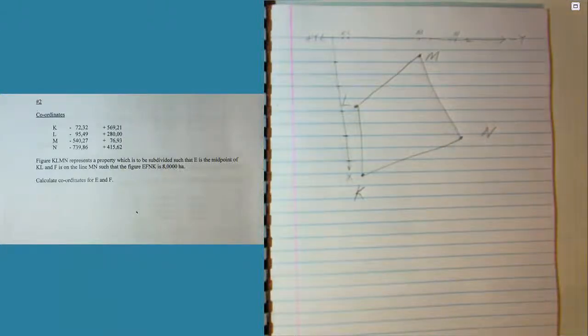So here's KLMN and point E is midway between K and L. And we know that EFNK is 8 hectares.